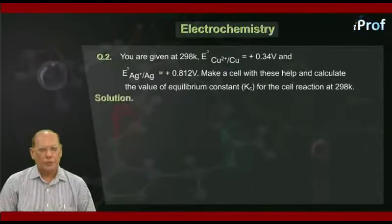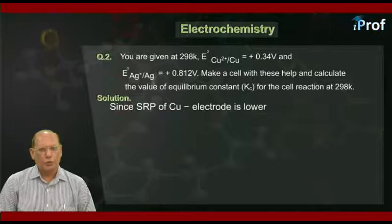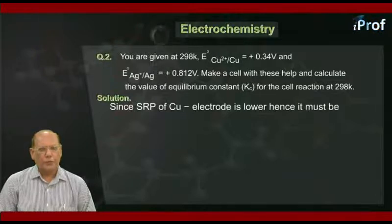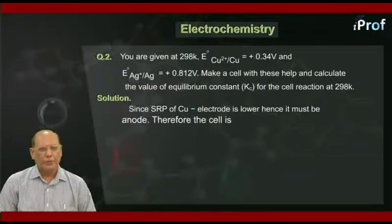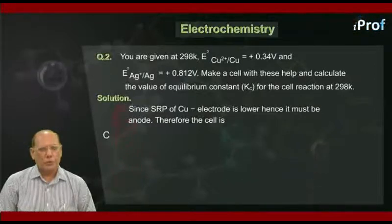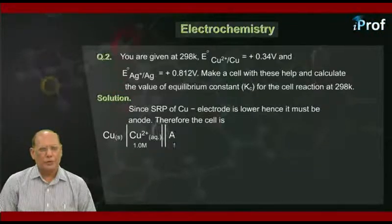Let us solve this question. Since SRP of Cu electrode is lower, hence it must be anode, and therefore the cell becomes Cu solid, Cu²⁺ equals 1.0.